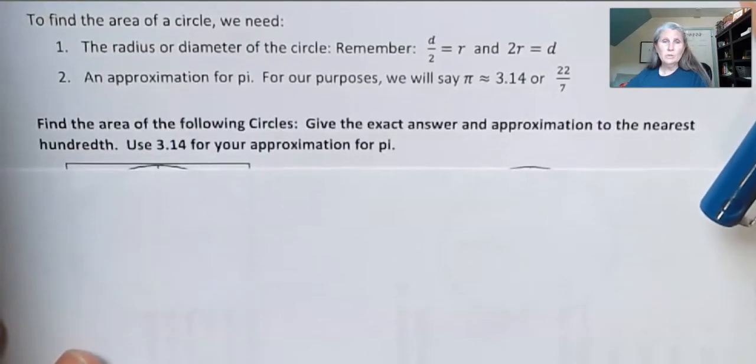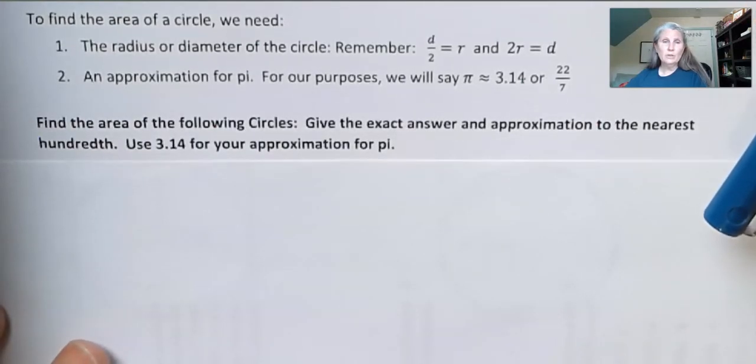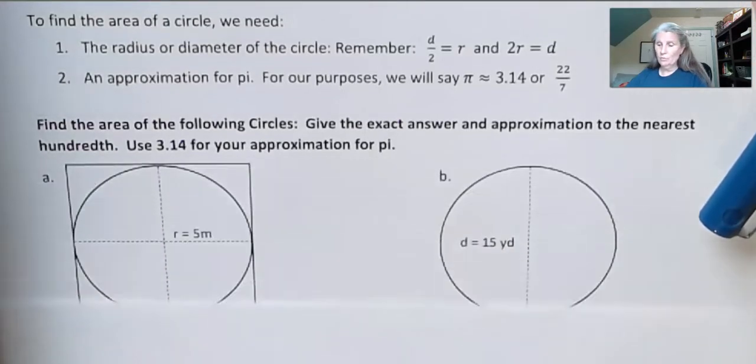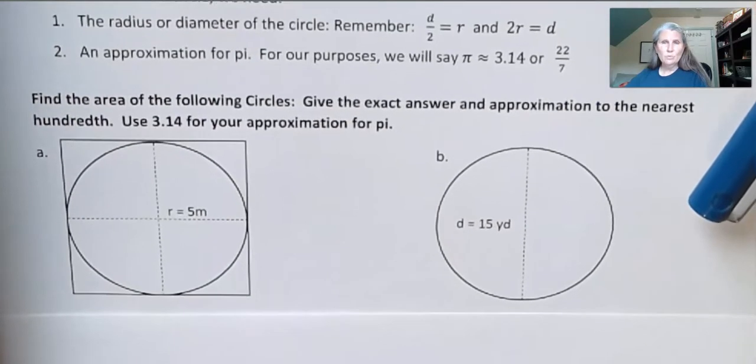So in these next ones, we're going to find the area of a circle. We're going to give the exact answer and an approximation to the nearest hundredth if we need to round. And then we're going to use 3.14 for your approximation for pi.